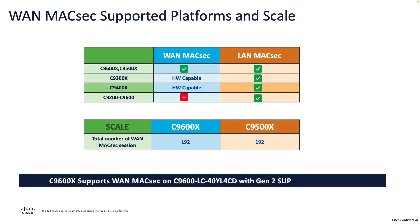Before wrapping up, let's look at the platforms that support WAN MACsec and associated scale. WAN MACsec is currently supported on our Silicon One-based boxes: the 9500X and 9600X. The 9300X and 9400X are hardware-capable and software support can be brought in a future release. The Catalyst 9200 through 9600 non-X variants do not support WAN MACsec. The 9500X and 9600X support 192 sessions. With that, we'll finish this video — thank you for watching.